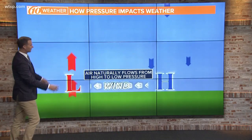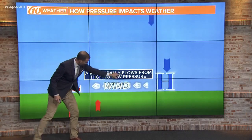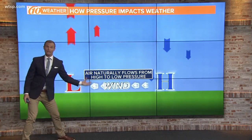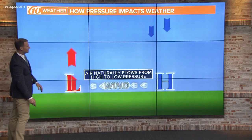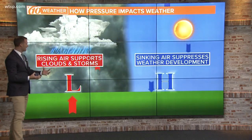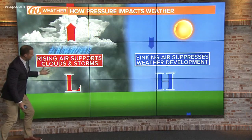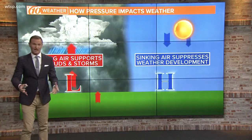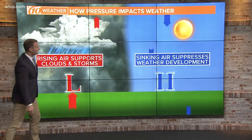Combined together, air will naturally flow from areas of high pressure to low pressure. That's actually where we get our wind — that natural flow from high pressure to low pressure. Within those areas, rising air is what supports clouds and storms. If you think about your water cycle, everything rises, it cools, it condenses, and eventually precipitates.